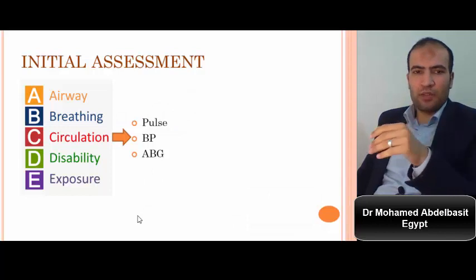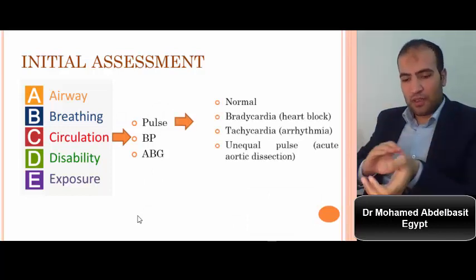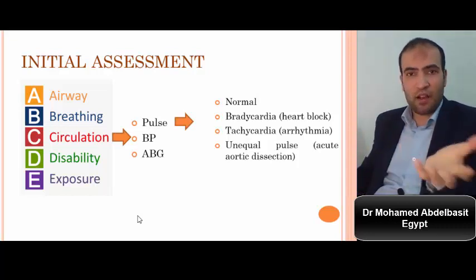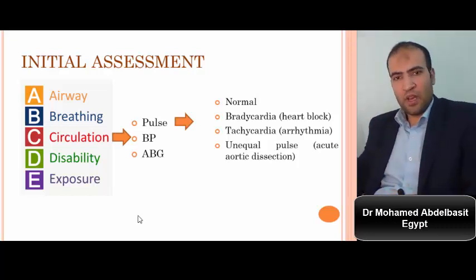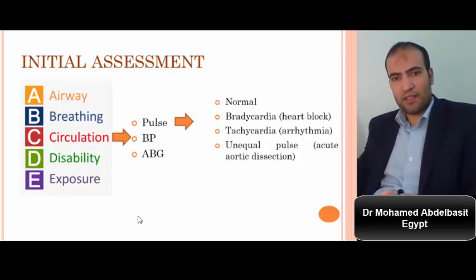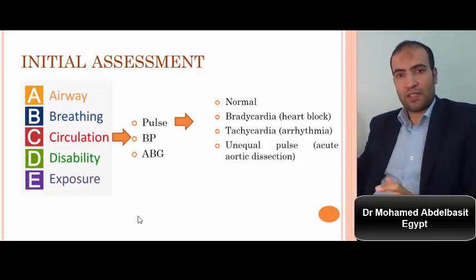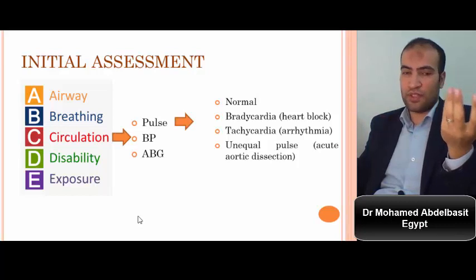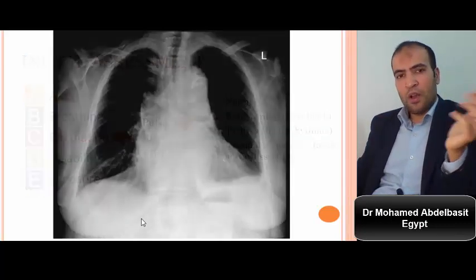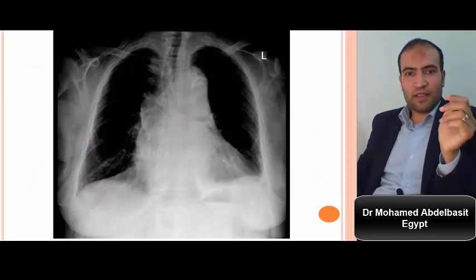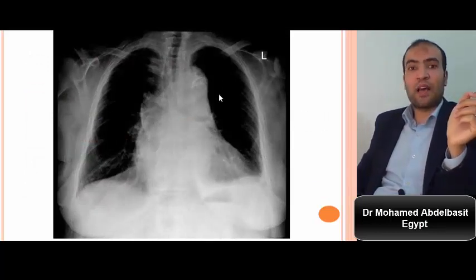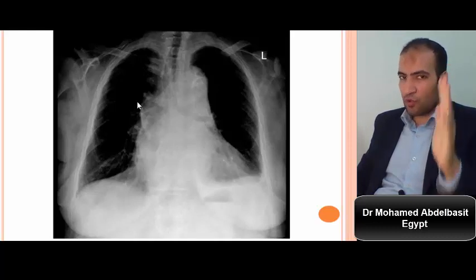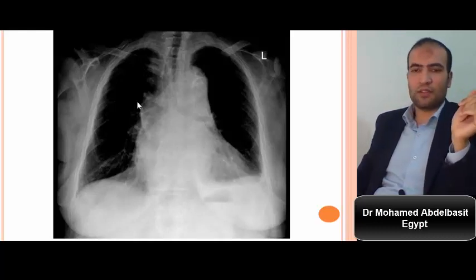The optimum oxygen saturation for a patient with COPD is 88–92%. For Circulation: assess pulse and blood pressure. During pulse examination, you could reveal bradycardia and diagnose heart block on ECG, or identify arrhythmia as a cause of chest pain. You could detect unequal pulse volume — big on one side and weak on the other — which raises concern about acute aortic dissection. This X-ray in a patient with unequal pulse showing an aortic aneurysm must raise your concern about aortic dissection.